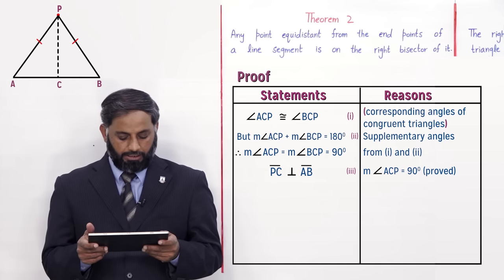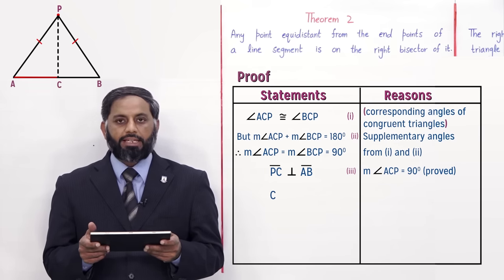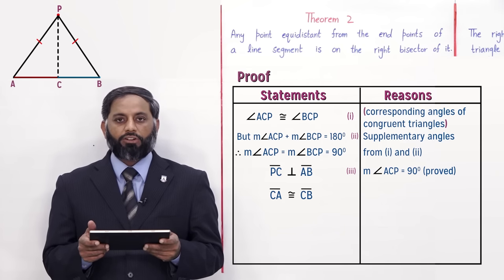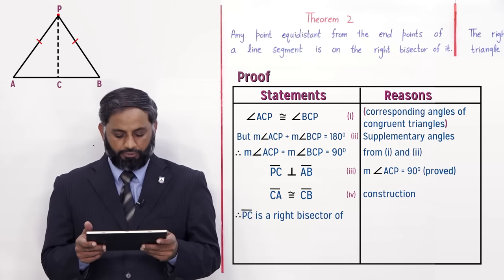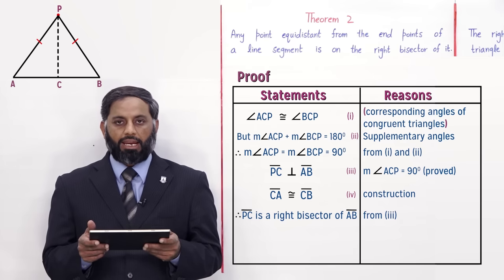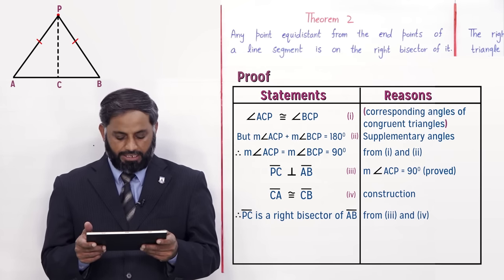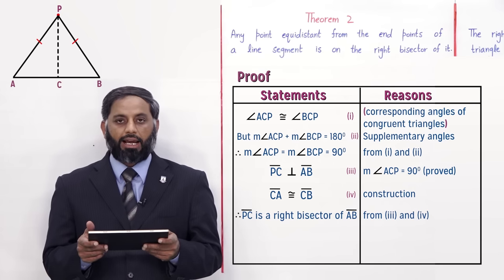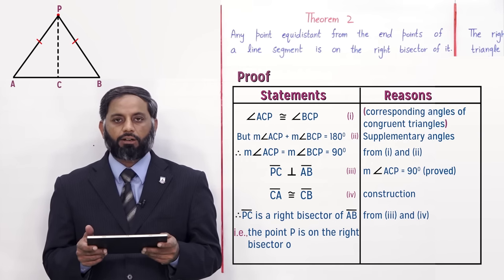We already proved this. We also know that point C divides line segment AB into two equal parts, so CA is congruent to CB — equation 4, reason: construction. Therefore PC is a right bisector of AB — reason: from equations 3 and 4. Because in equation 3 we proved PC is perpendicular to AB, and in equation 4 CA is congruent to CB. Hence PC is the right bisector of line segment AB, meaning point P is on the right bisector of AB.